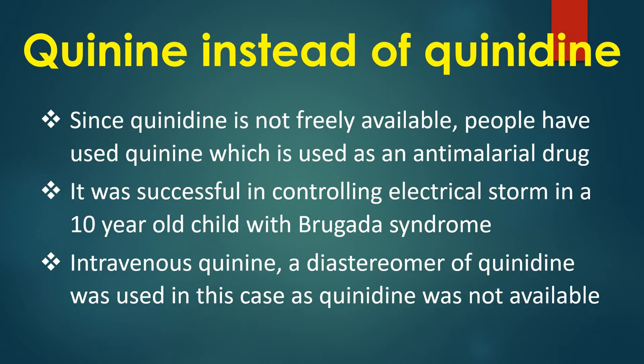Since quinidine is not freely available, some have used quinine, which is used as an anti-malarial drug. It was successful in controlling electrical storm in a 10-year-old child with Brugada syndrome. Intravenous quinine, a diastereomer of quinidine, was used in this case as quinidine was not available.